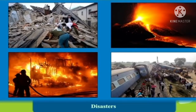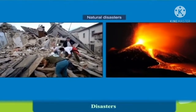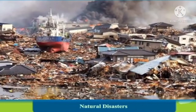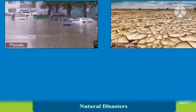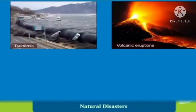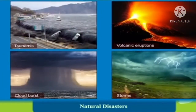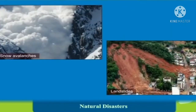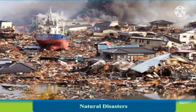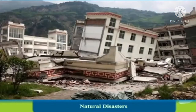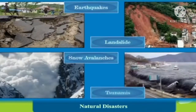Natural disasters occur due to natural phenomena — you can see volcanic eruptions. Now let's talk about man-made disasters. Most natural disasters cannot be prevented or averted; they take their own course and cannot be controlled, but we can minimize them — like floods, tsunamis, volcanic eruptions, cloudbursts, storms, snow avalanches, and landslides. If we are very careful, we can save life and properties from damage.